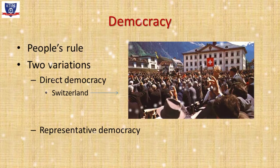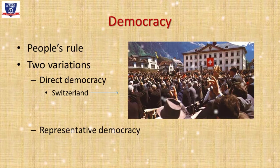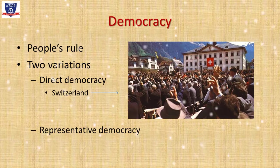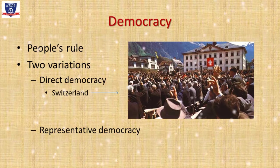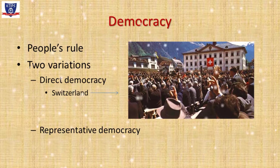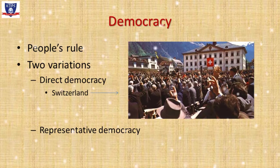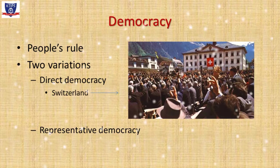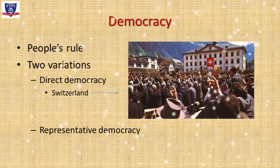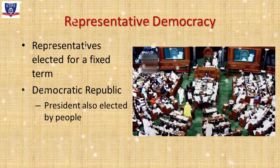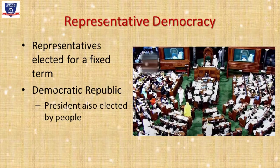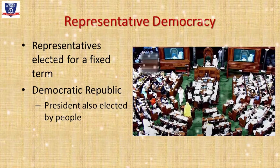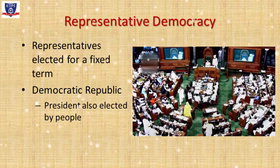But democracy is very different from these two forms of government. Democracy stands for people's rule. People are involved in the formation of government directly or indirectly through elections. There are two kinds of democracy: a direct democracy and a representative democracy. A direct democracy is one where the government is elected and run directly by the people, but this is impossible in countries with a large population. Switzerland is the only nation where a direct democracy is in practice today. Most countries, including India, follow a representative or indirect democracy, where the people elect their representatives for a fixed term, who form and run the government on behalf of the people.